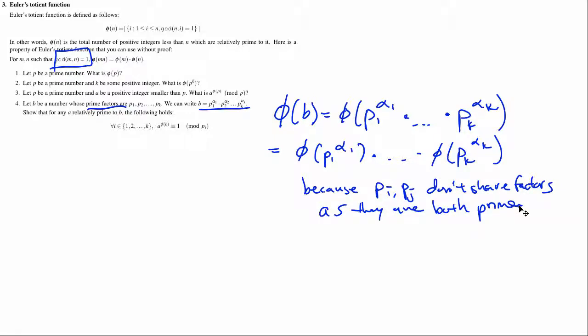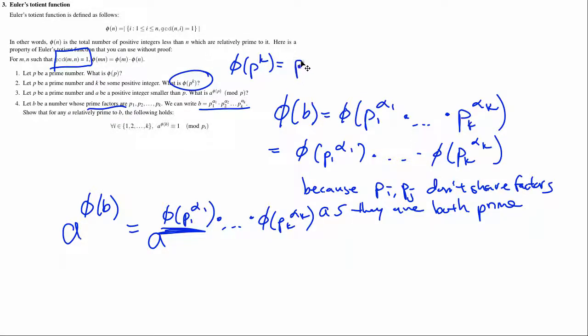So we can break this equation here, dot dot dot times phi of p_k^(alpha_k), because p_i, p_j don't share factors as they are both prime. Okay. And so then, if we take a to the power of phi of b, then we get a to the phi of p1^(alpha_1), I'm thinking about pi right now, but that's not right, p_k^(alpha_k). And we can simplify, we can evaluate each of these function calls because we solved them in part 2. Remember, the solution we got in part 2 was p^(k-1)(p-1).